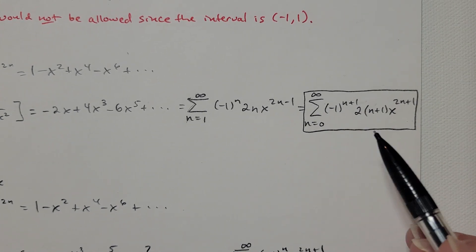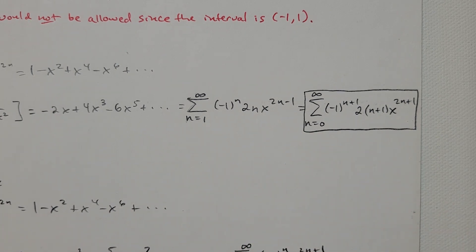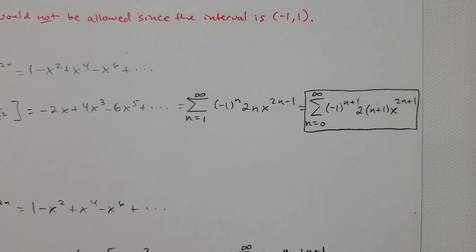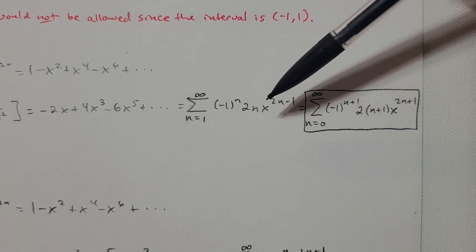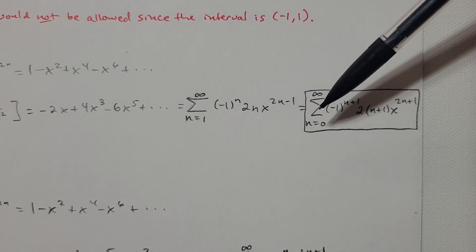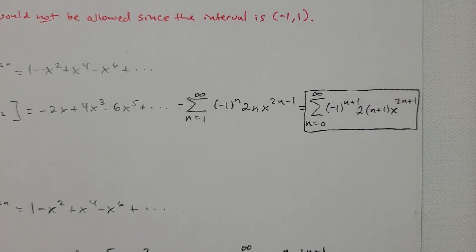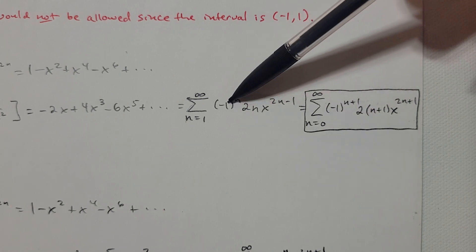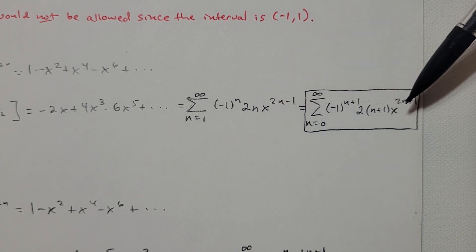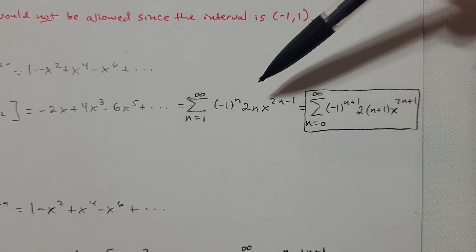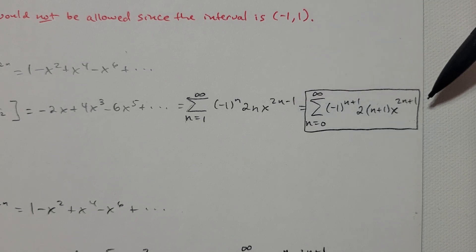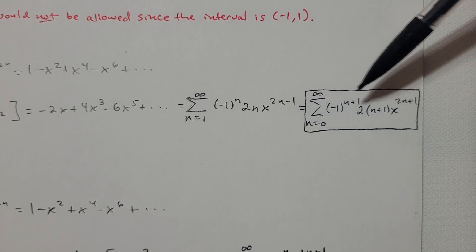Now, the original series started at 0. If I want my answer starting at 0 instead of 1, I can re-index by replacing n with n+1 throughout the formula. So I get the summation as n=0 to infinity of (-1)^(n+1) · 2^(n+1) · x^(2n+1), since 2(n+1)-1 = 2n+1.